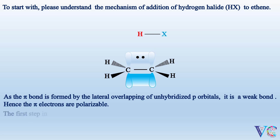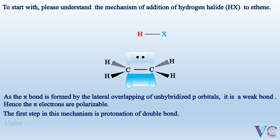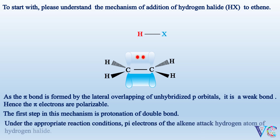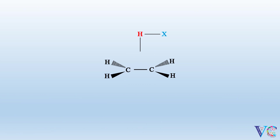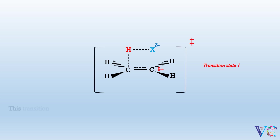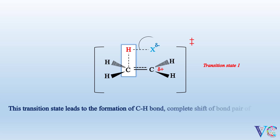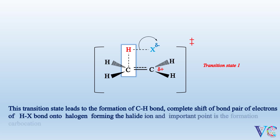The first step in this mechanism is protonation of the double bond. Under the appropriate reaction conditions, pi electrons of the alkene attack the hydrogen atom of hydrogen halide. As a result, transition state 1 is formed. This transition state leads to the formation of a C-H bond, complete shift of the bond pair of electrons of the H-X bond onto the halogen, forming the halide ion. And importantly, the formation of a carbocation.